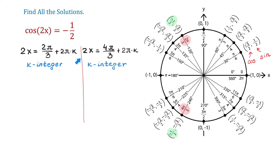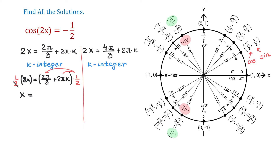Now we still have to solve each of these equations for x. Starting with the first one, we will multiply both sides by 1 half. On the right side we have 2π over 3 plus 2π times k, all multiplied by 1 half. Using the distributive property, 2π over 3 times 1 half gives π over 3, and 2πk times 1 half gives πk. So x equals π over 3 plus kπ, and this is the first set of solutions.